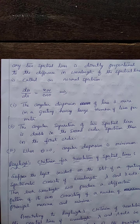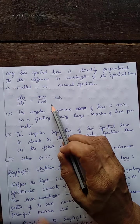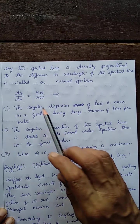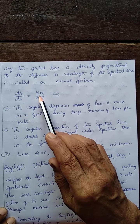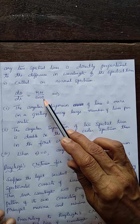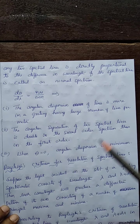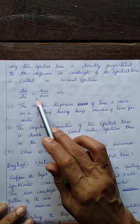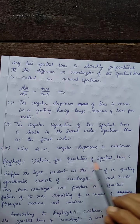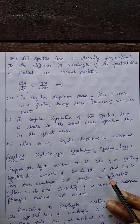In this spectrum, if dθ is proportional to dλ — that is, angular dispersion is directly proportional to difference in wavelength — then such a spectrum is called a normal spectrum. The expression shows that angular dispersion dθ is greater for a grating having more lines per meter, and it also increases with increase in order n. Angular dispersion varies inversely with cos θ; when θ is small, cos θ approaches 1, giving maximum value of 1, so angular dispersion is minimum when θ is 0.